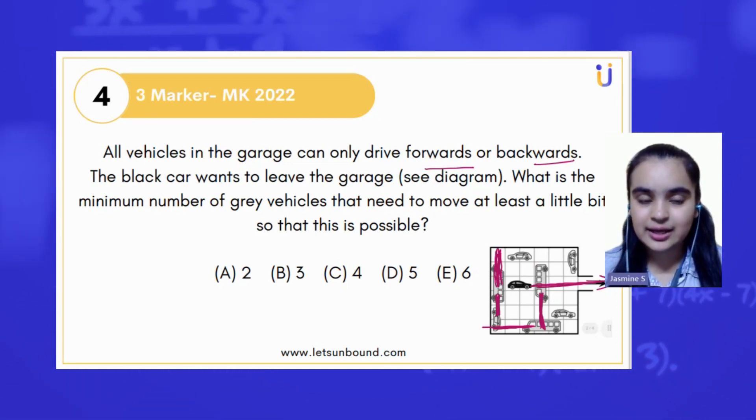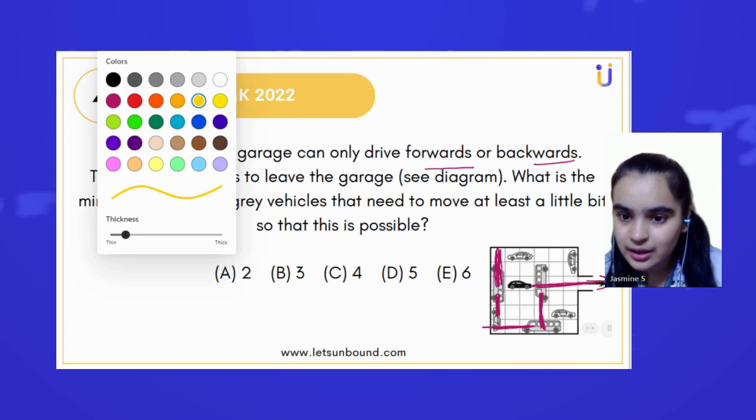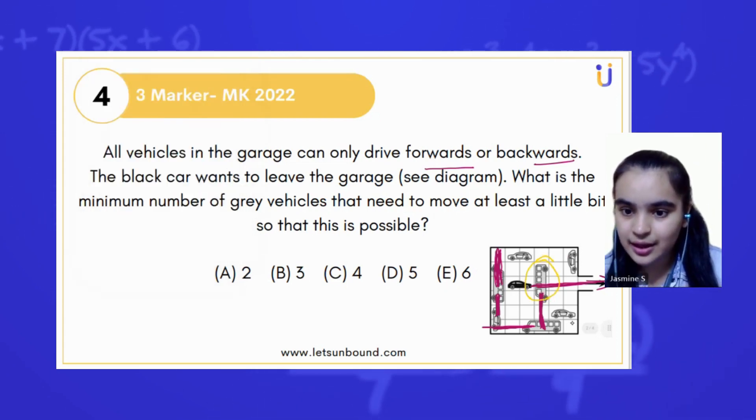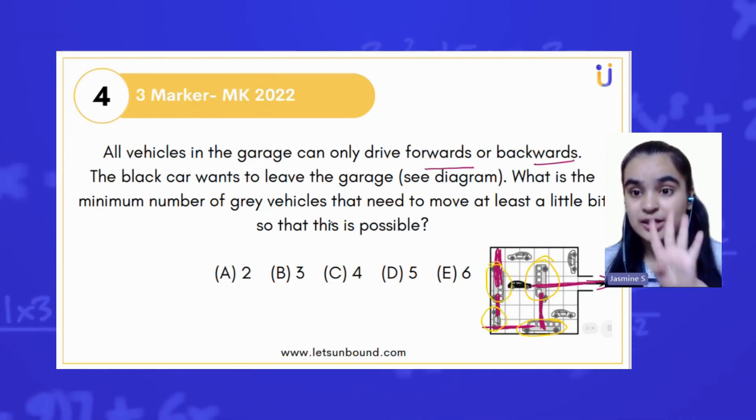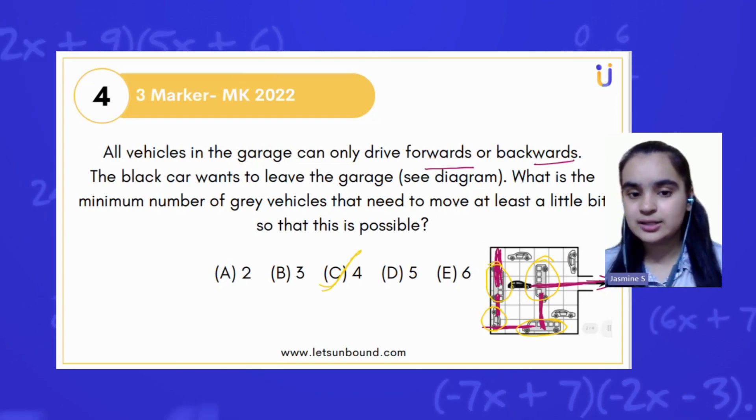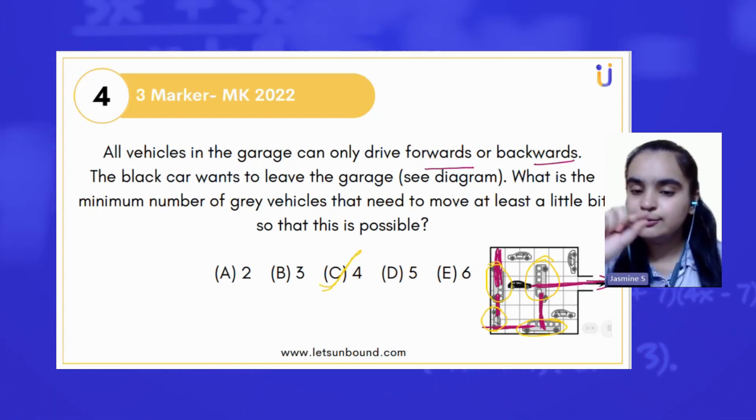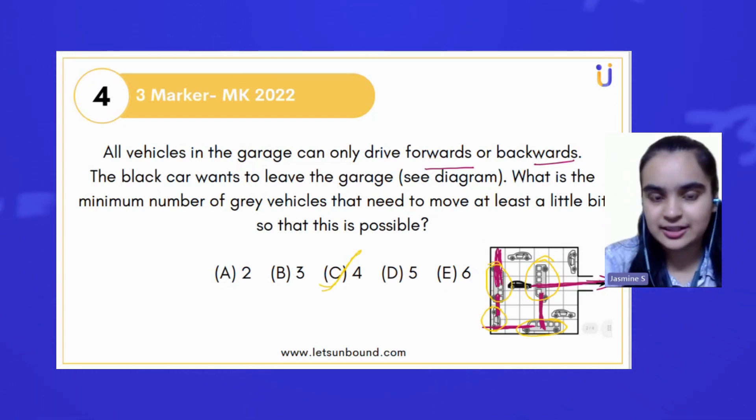Number one is this, number two is this, number three is this, and number four is this. So, in total, we can move four cars, four vehicles actually, to move that black car out of the garage.